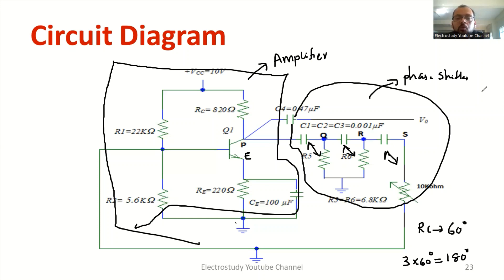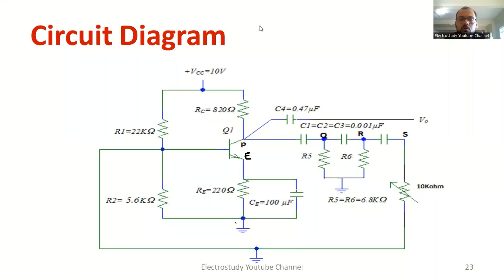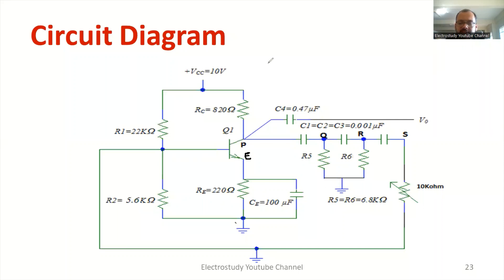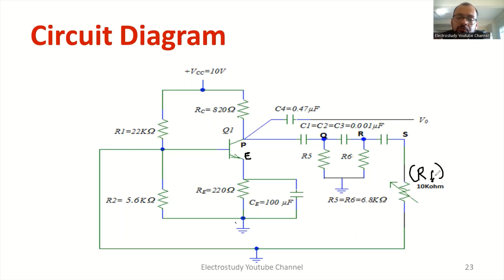Now, regarding the feedback — there is a feedback resistor RF. One advantage is we can tune this feedback resistor RF and tune the output. If you change the value of RF and the output is not varying, that means your output will not be correct. So that is one thumb rule you can apply.